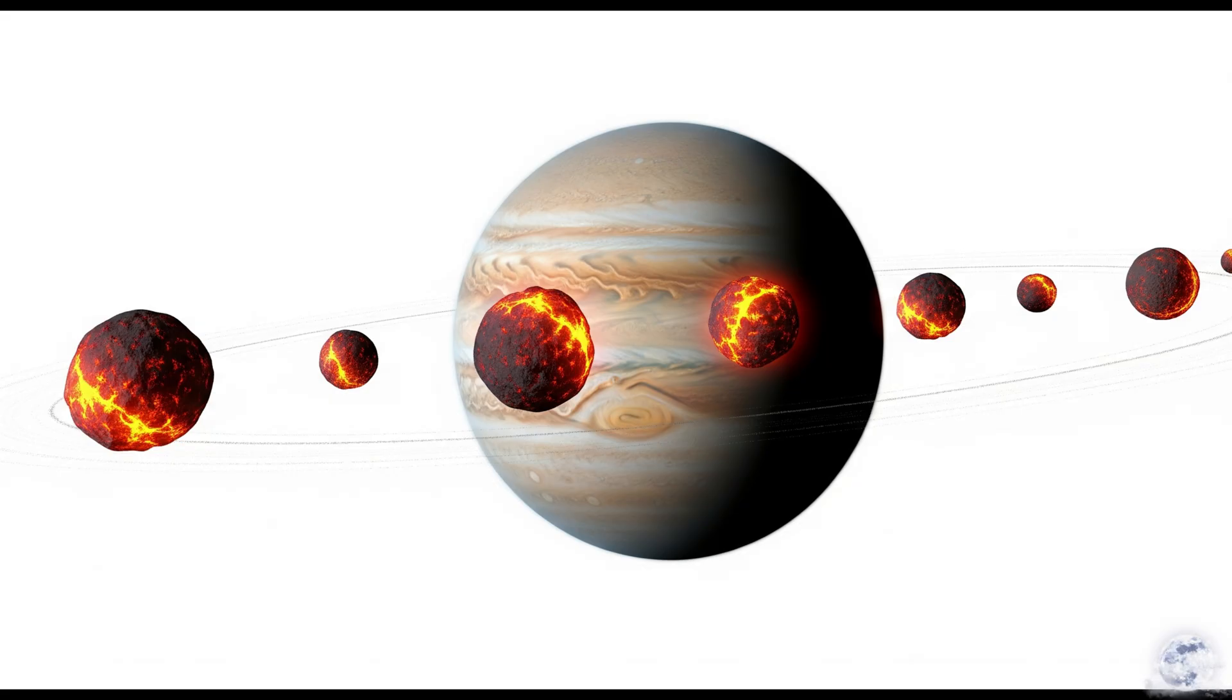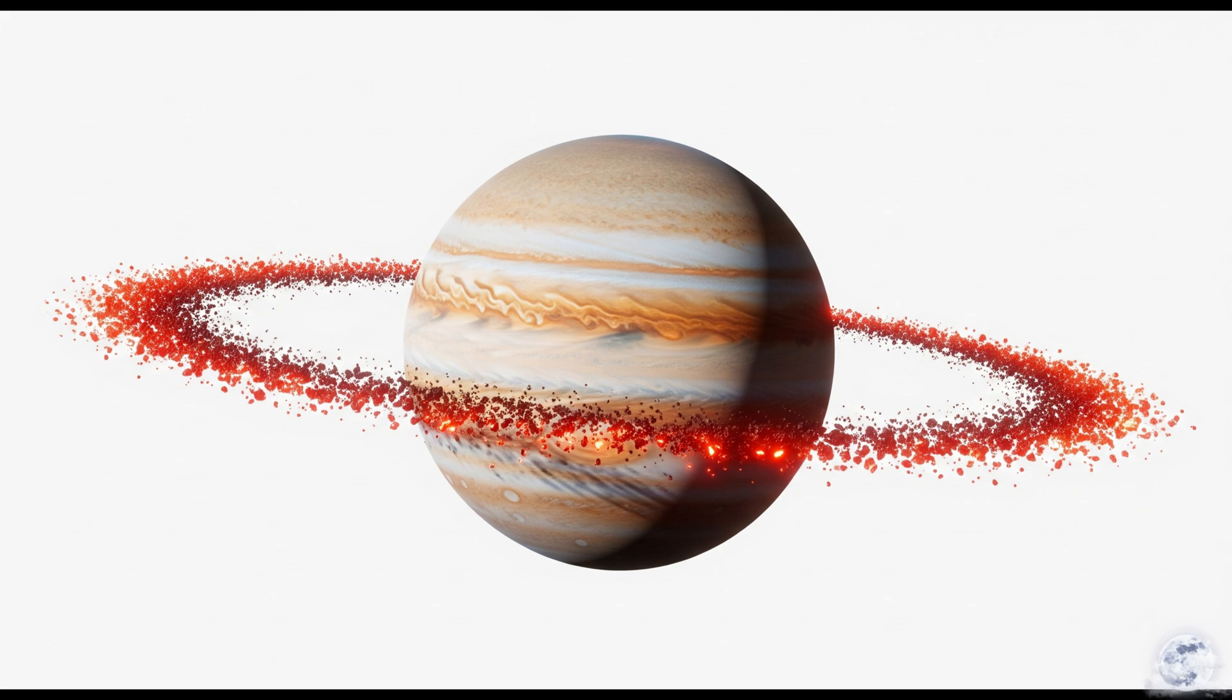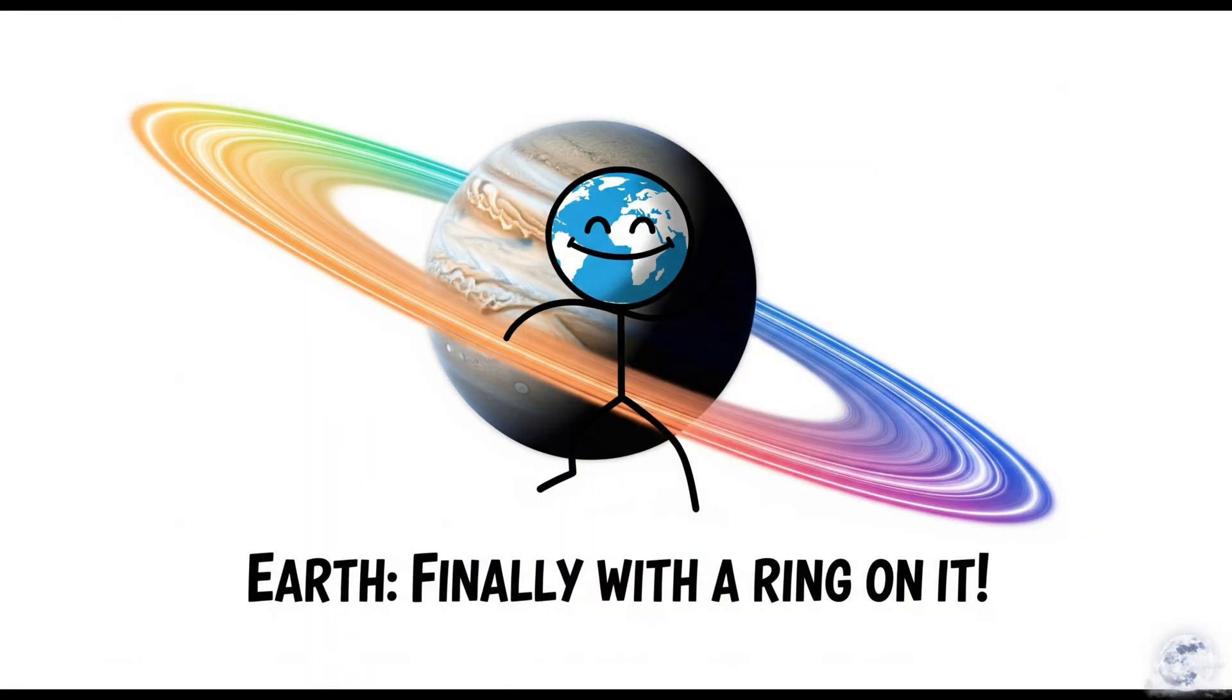After a few hours, the process would be complete. Where the Earth once was, there would now be a new, glowing hot ring of rock and iron orbiting Jupiter. On the plus side, from Jupiter, the view would be spectacular. And for the first time in its history, the Earth would finally have a ring on it.